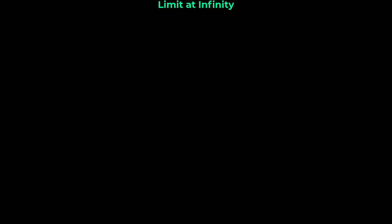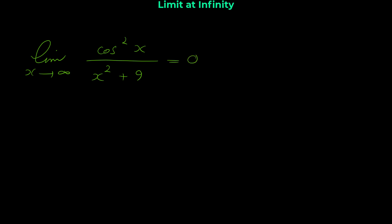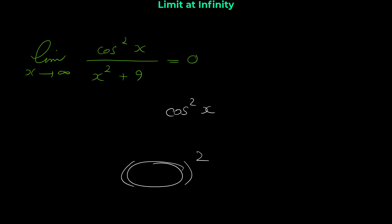The second example: we want to prove that the limit of cosine squared 2x over x squared plus 9 as x approaches infinity is zero. Similar to the previous example, we start with the trig part of the function — cosine squared 2x. We know that any cosine function is between negative one and one, but note that here we have cosine squared, and any expression squared cannot be negative.